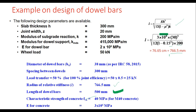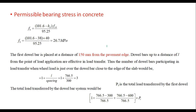With these parameters, the permissible bearing stress in concrete is calculated: Bd = 38 mm, Fck = 40 MPa, giving Fb = 26.7 MPa. The first dowel bar is placed at 150 mm from the pavement edge, and dowel bars within distance L from the load application point are effective in load transfer. The number of effective dowel bars is: 1 + (L / spacing) = 1 + (766.5 / 300) = 3 dowel bars.